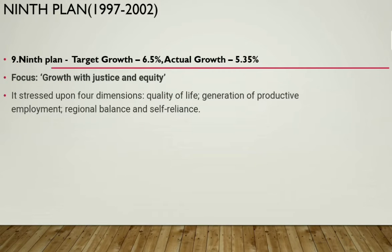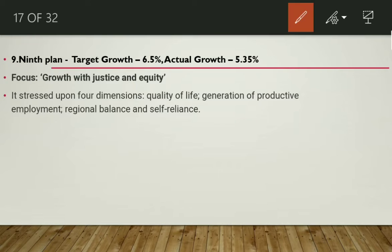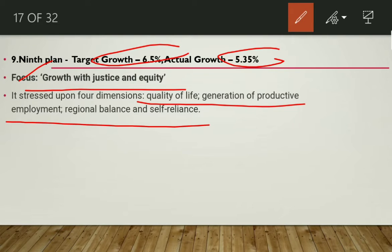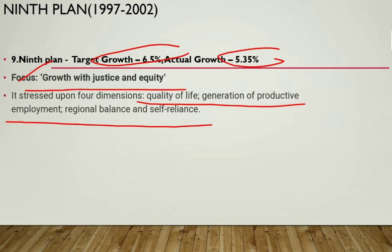The Ninth Five Year Plan ran from 1997 to 2002 with a target growth of 6.5% but an actual growth of only 5.3%. Its focus was 'growth with justice and equity.' The plan outlined four dimensions: quality of life, generation of productive employment, regional balance, and self-reliance.